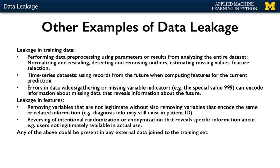We can divide leakage into two main types: leakage in the training data, typically where test data or future data gets mixed into the training data, and leakage in features, where something highly informative about the true label somehow gets included as a feature. One very important cause of data leakage is performing some kind of preprocessing on the entire dataset whose results influence what is seen during training. This can include computing parameters for normalizing and rescaling, finding minimum and maximum feature values to detect and remove outliers, and using the distribution of a variable across the entire dataset to estimate missing values or perform feature selection.